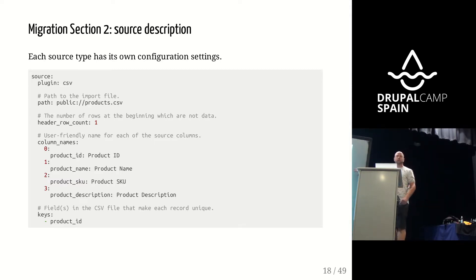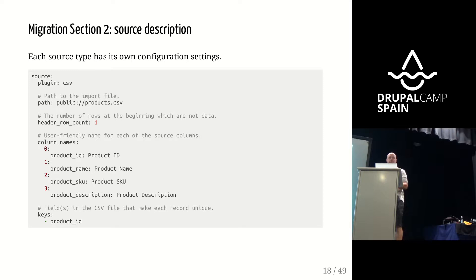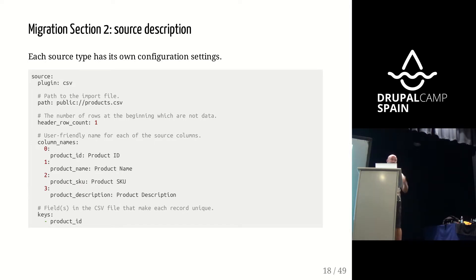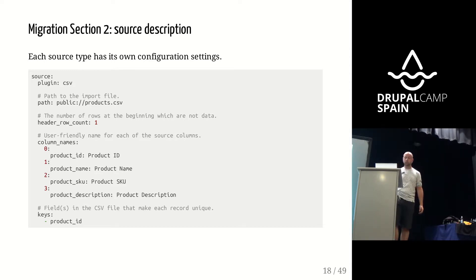If you download the sample code from my GitLab repo, the source files are in a folder called data. Take those files and put them in your public directory and everything will work. You need to tell Drupal which file it is. You need to tell Drupal the header row count — meaning do we start from the first record or second record — because CSV files usually have the first record as column names, but that's not always the case. Some CSV files can even have multiple header lines and the actual data only starts at the 10th or 20th record.